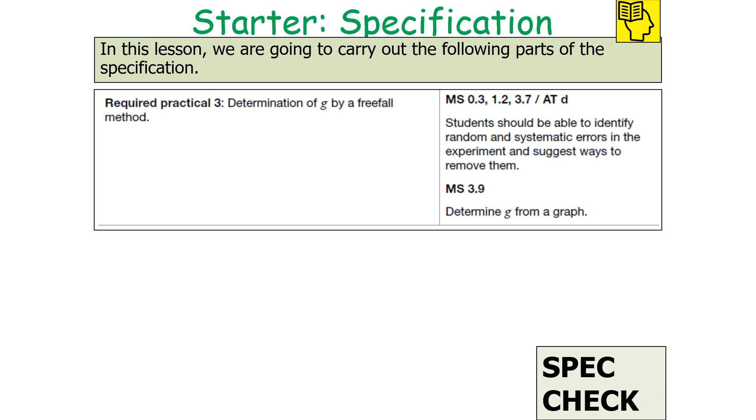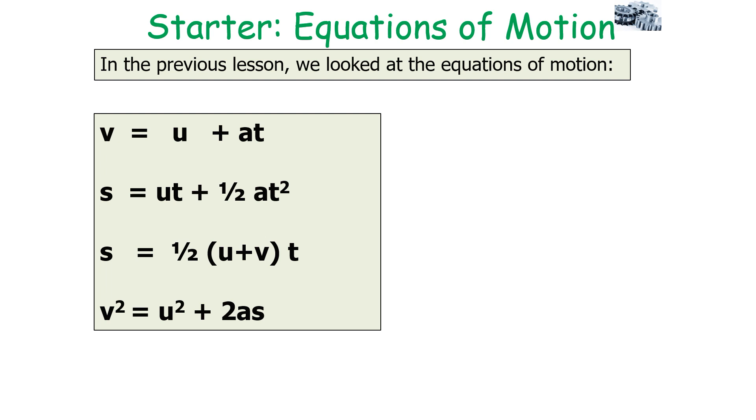In today's lesson, we're looking at the following parts of the AQA A-level physics specification, predominantly the required practical three: determination of g by freefall. In the previous lesson, we looked at the equations of motion: v = u + at, s = ut + ½at², s = ½(u + v)t, and v² = u² + 2as.